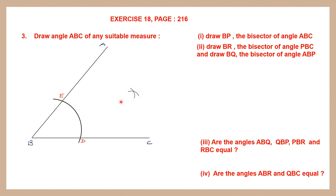Now join B to the intersection of the two arcs. Let's name that point P. The question says draw BP, so we join that — and we have drawn BP, the bisector of angle ABC. BP has divided ABC into two equal halves: angle ABP and angle PBC. So that is the first part and we have finished that.